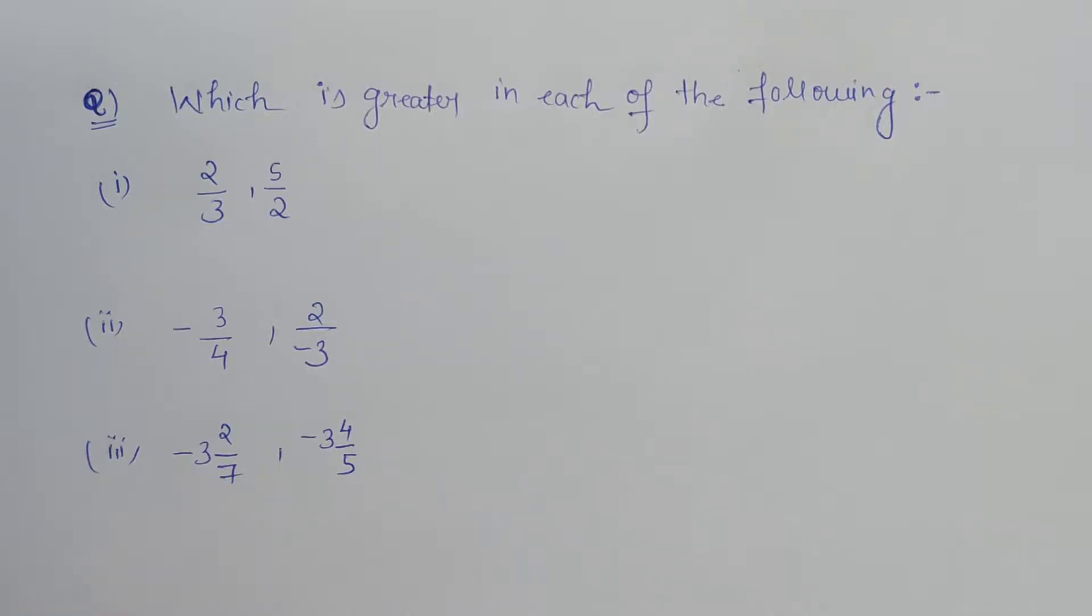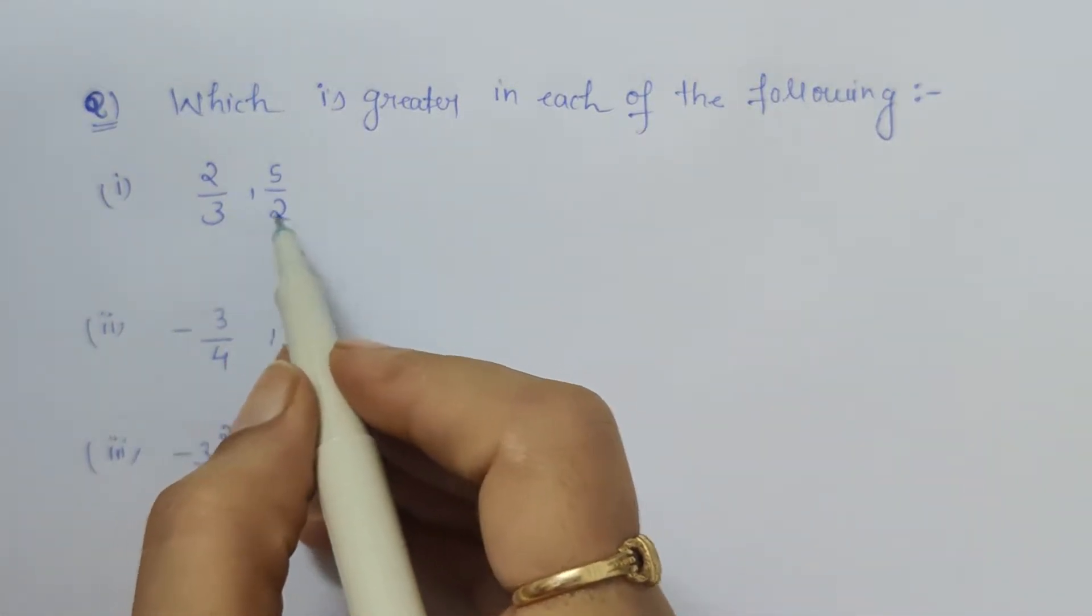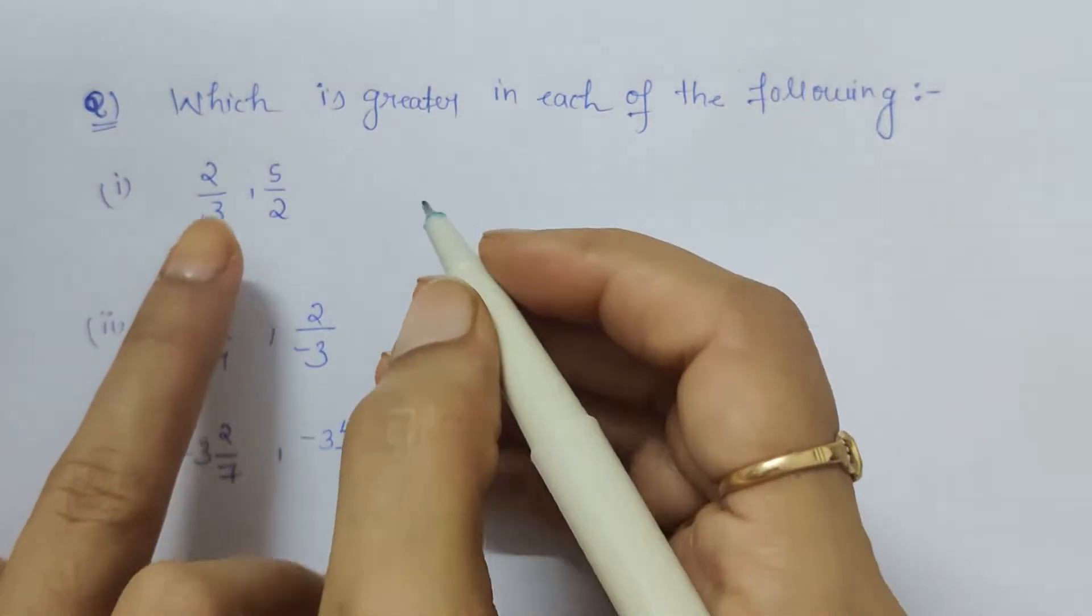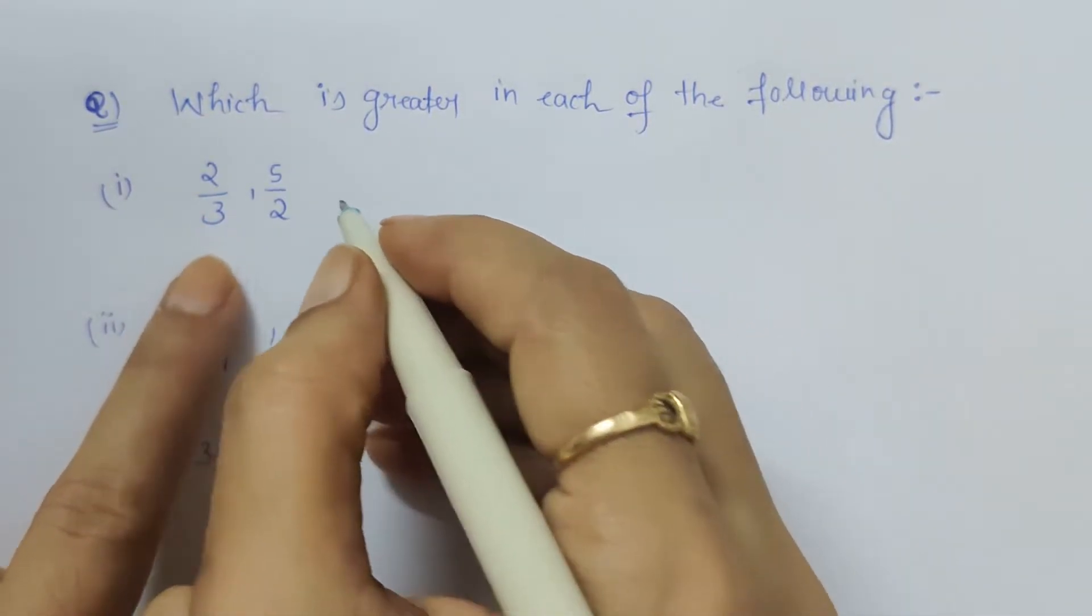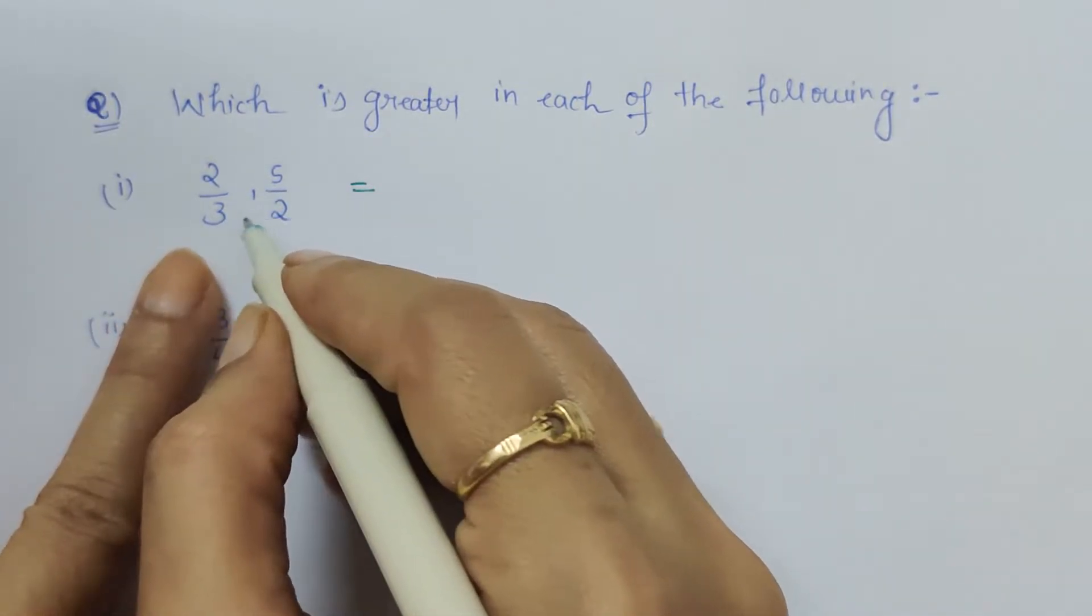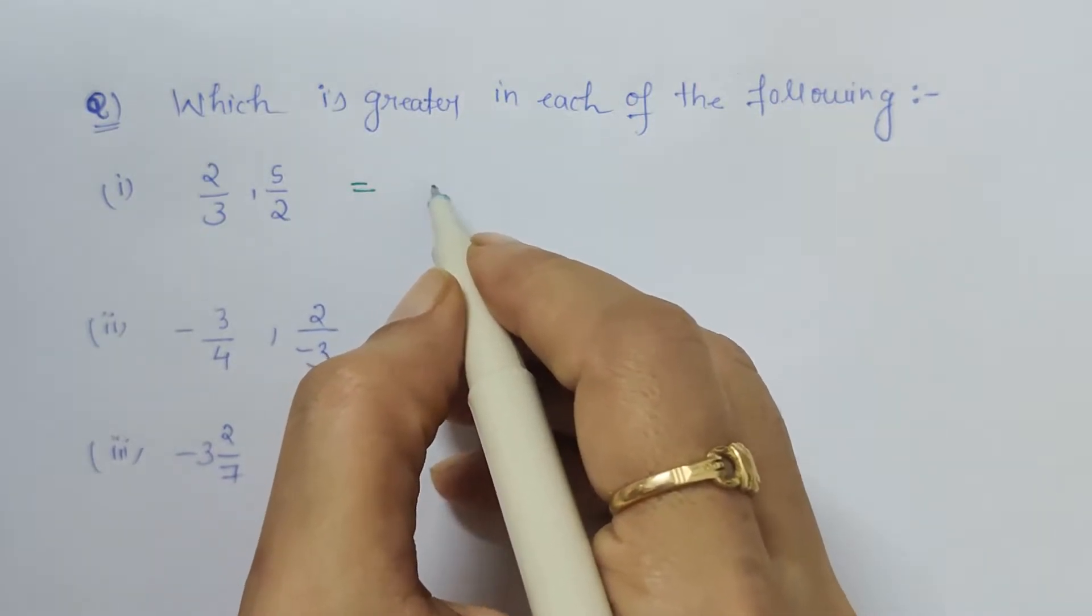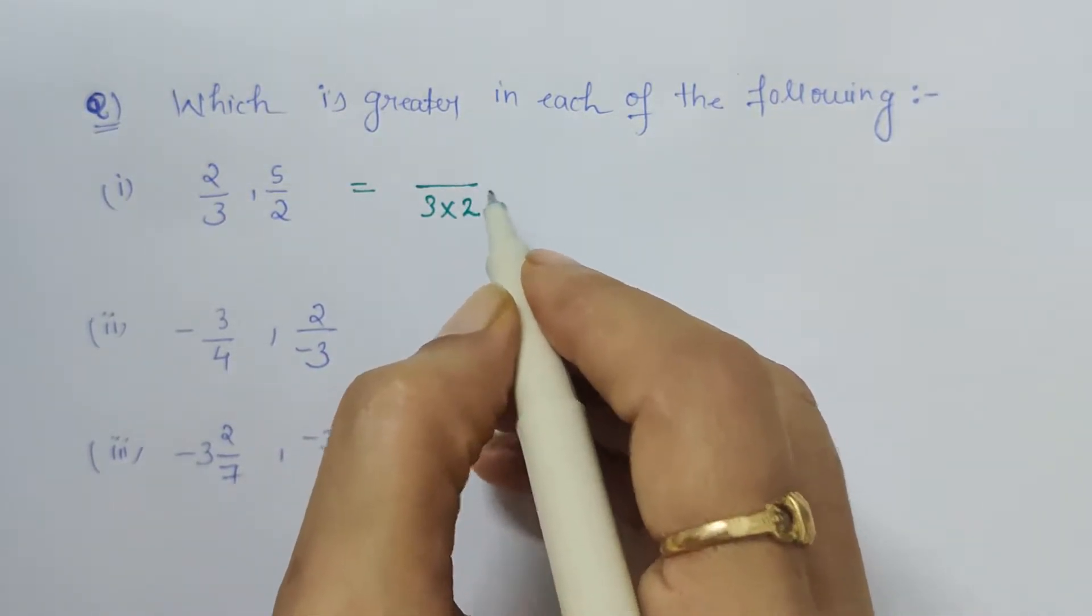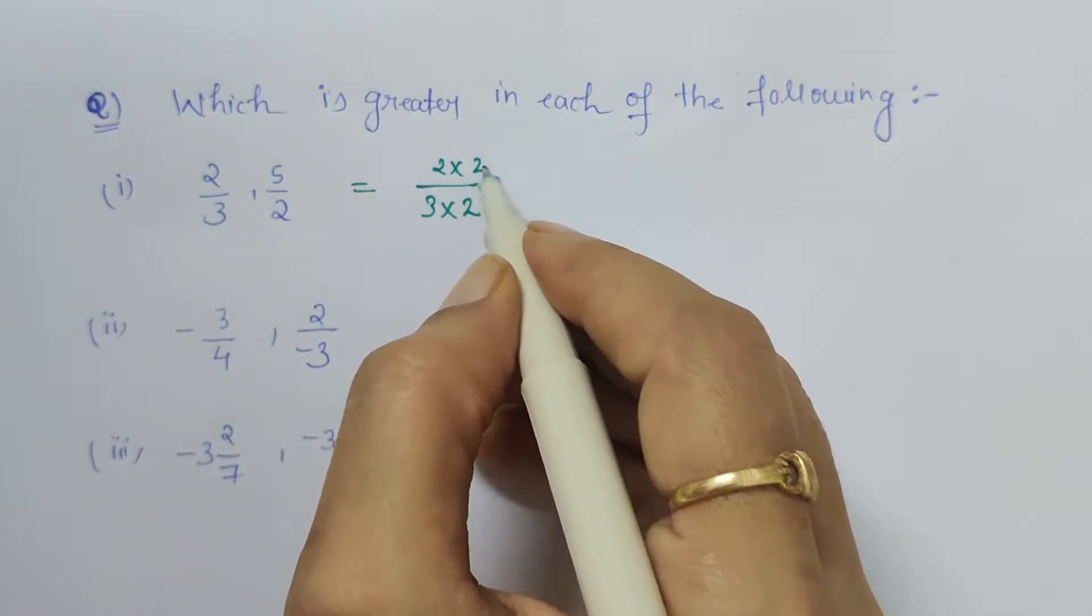Hello friends, in this video we have to compare which fraction is greater: 2 by 3 or 5 by 2. So here first we will find the LCM of the denominator. As we can see, the LCM of 3 and 2 is 6. For getting 6, we have to multiply the denominator by 2, so numerator also by 2.